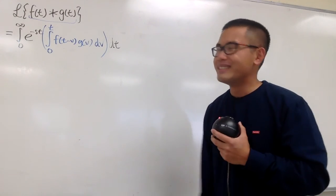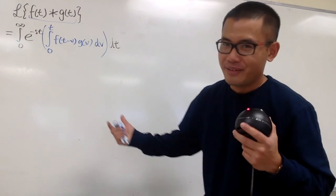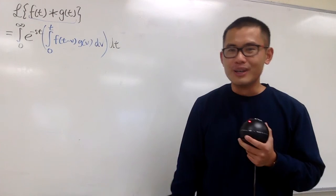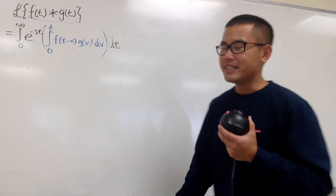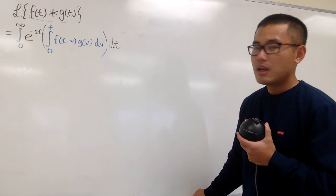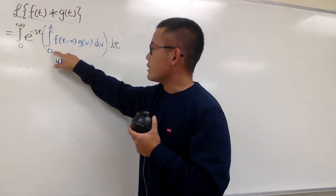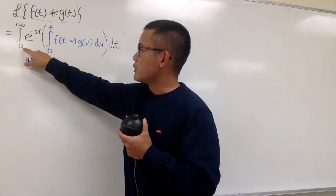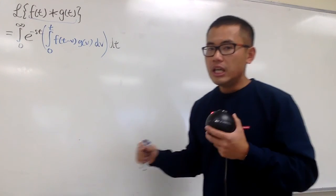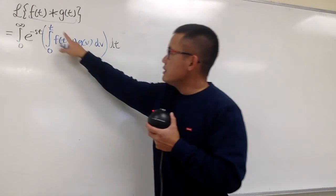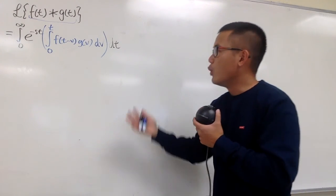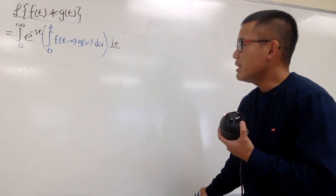We're making progress, but now we have an integral inside of another integral — a double integral, just like calculus 3. The limit of the inner integral goes from 0 to t, but the outer one goes from 0 to infinity, and t is a variable. It would be much better if this inner integral also went from 0 to infinity, so that we can change the order of integration if necessary.